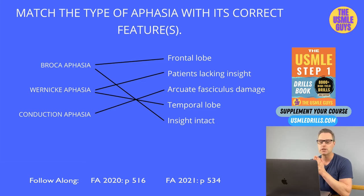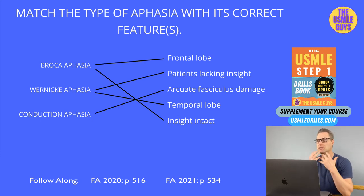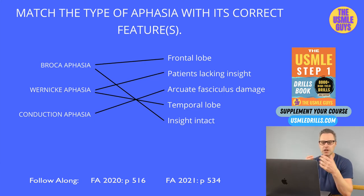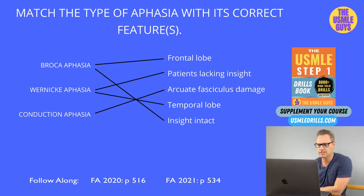The lesion associated with Wernicke's is in the temporal lobe, in the superior temporal gyrus. There's also conduction aphasia, whose main defining characteristic is an inability to repeat what someone has just said. Unlike Broca's aphasia, which is characterized by non-fluent speech, in conduction aphasia you can't repeat what someone has said — a very interesting type of aphasia.